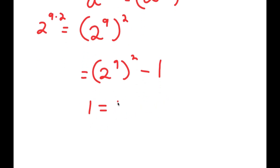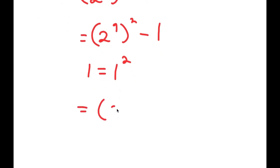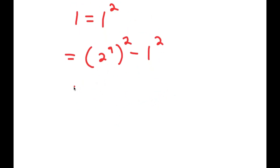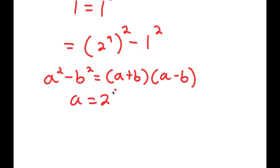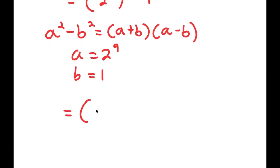Now, 1 is the same thing as 1 squared, so I rewrite 1 as 1 squared, giving me (2^9)^2 minus 1^2. I can now use the difference of squares property: a^2 minus b^2 equals (a+b)(a-b). So with a = 2^9 and b = 1, I get (2^9 + 1) times (2^9 minus 1).